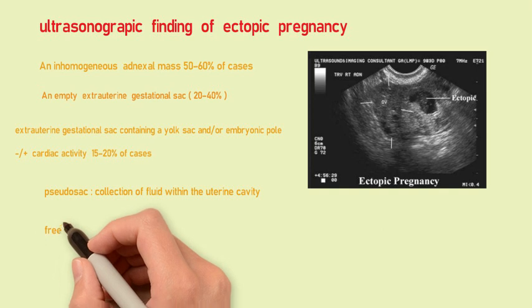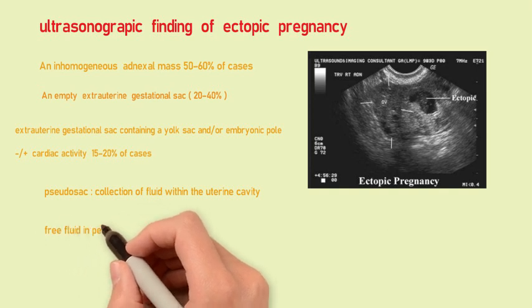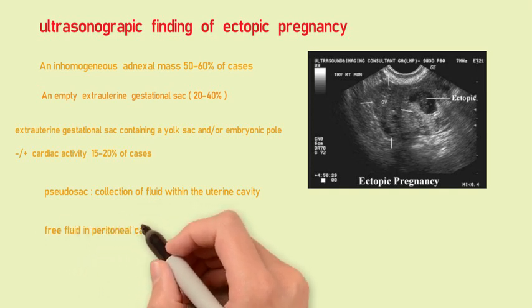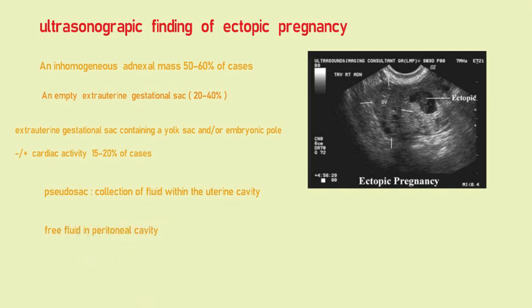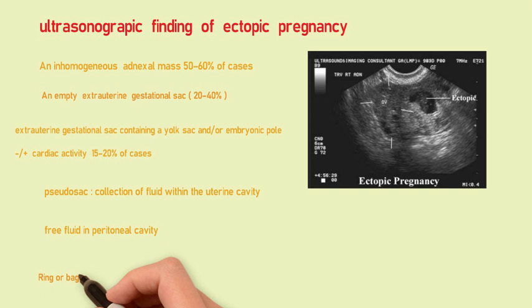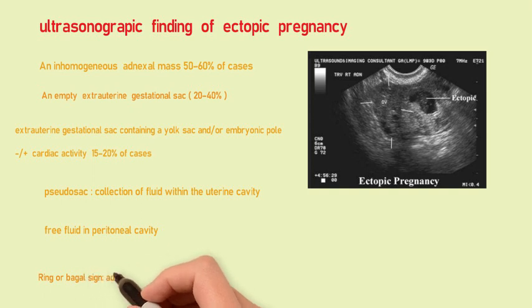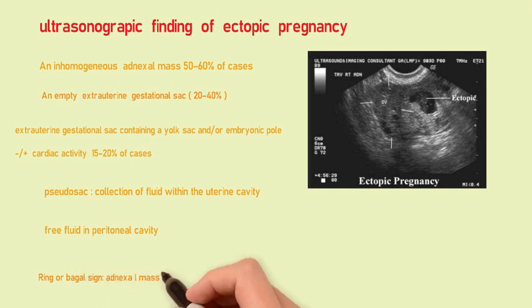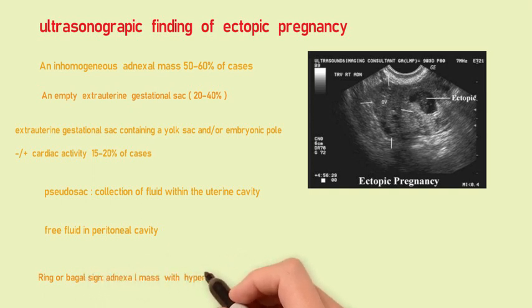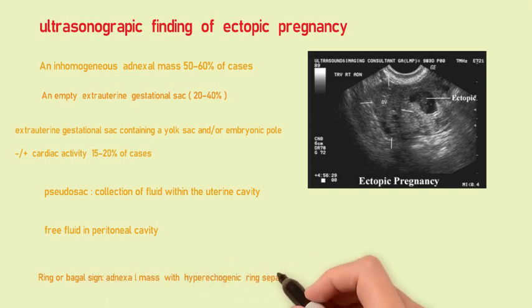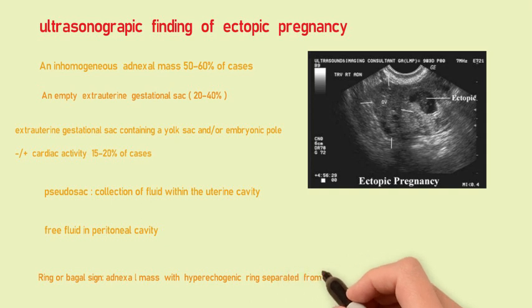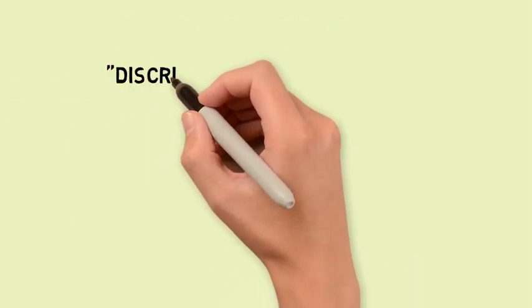Pseudogestational sac, which means collection of fluid within the endometrial cavity. Free fluid in the peritoneal cavity. Ring or bagel sign, which means the affected tube is seen swollen with a cystic center.